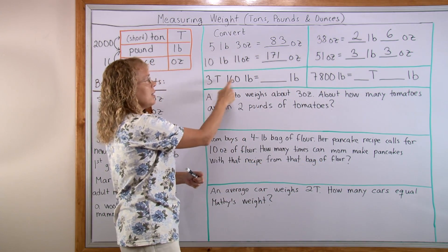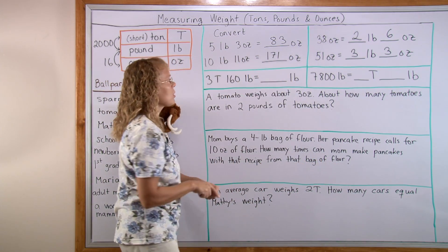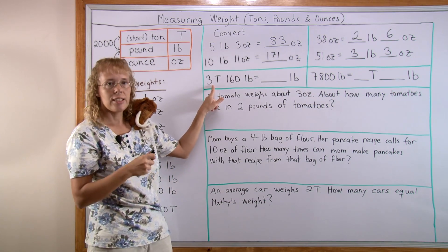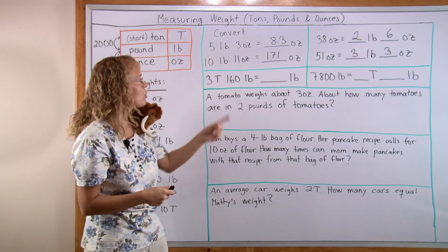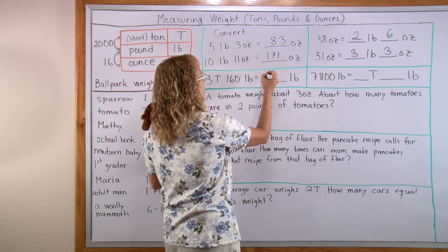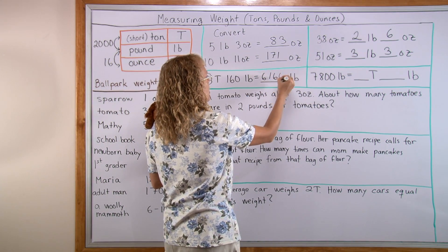Now we have tons and pounds into pounds. First we multiply: 3 tons times 2,000 makes 6,000 pounds, plus 160 pounds equals 6,160 pounds.